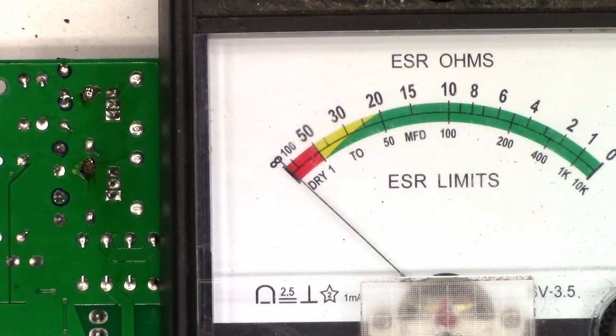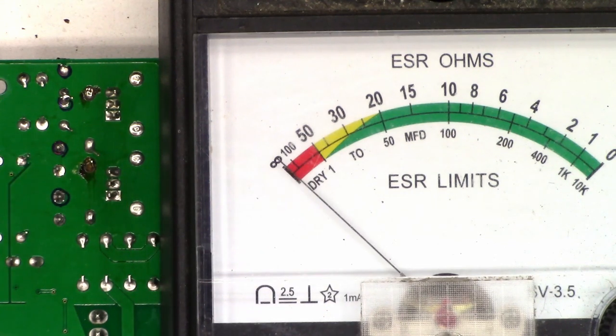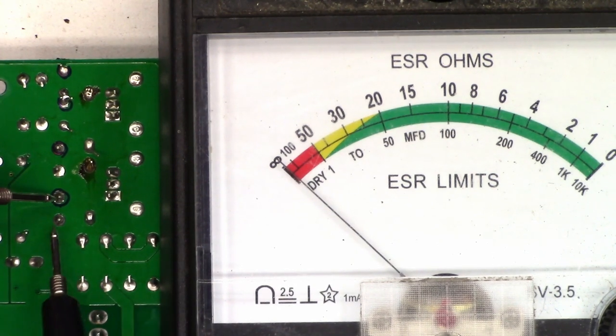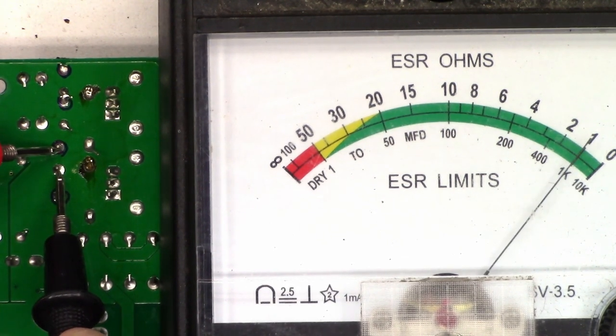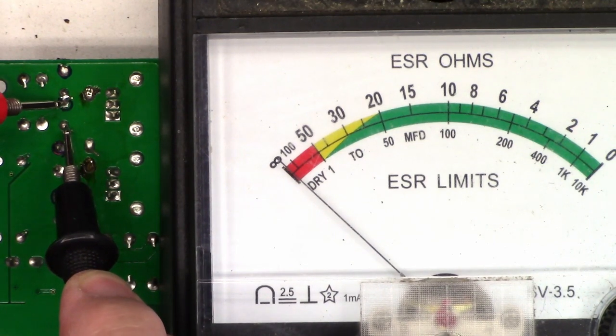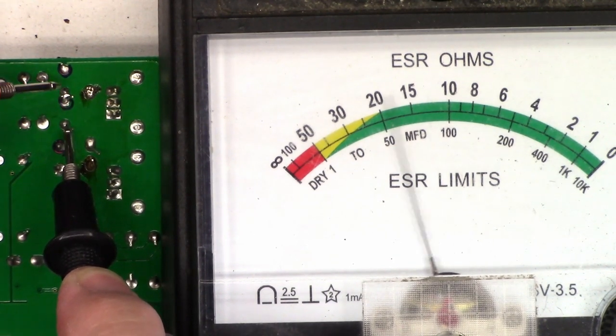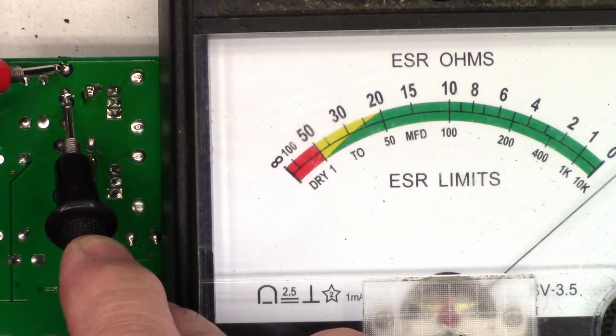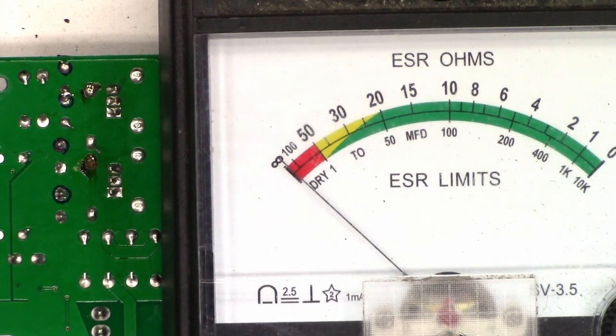I have my ESR meter connected. Let's go ahead and zero the leads out and make sure we get close to zero. I went ahead and marked the positive leads on all four of these capacitors. We'll check the input filter - half an ohm, that's good. The other input filter, about an ohm, that's probably acceptable. This is the minus 15 output filter, just under one ohm. And this is the positive 15 output filter, half an ohm. So the output filters are perfectly fine.